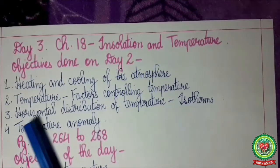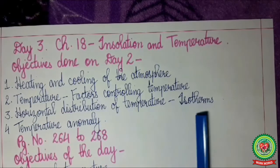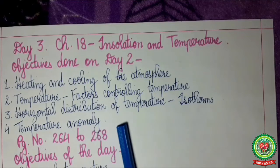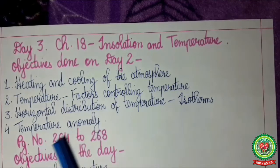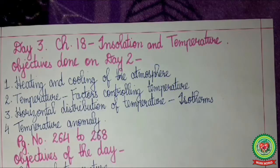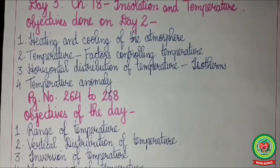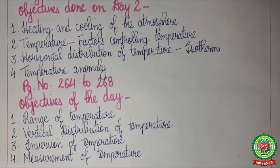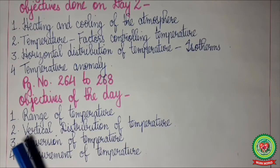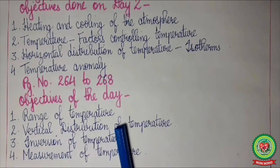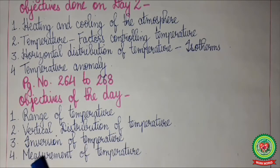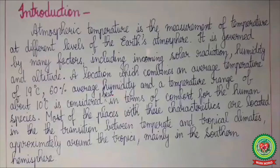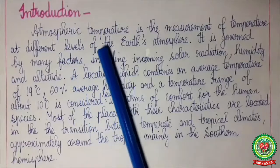Previously we covered: number two, temperature and factors controlling temperature; number three, horizontal distribution of temperature, isotherms, and temperature anomaly. Today we will discuss from page 264 to 268. The objectives of today's class are: number one, range of temperature; number two, vertical distribution of temperature; number three, inversion of temperature; and lastly, the measurement of temperature.